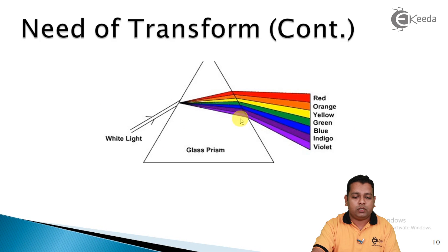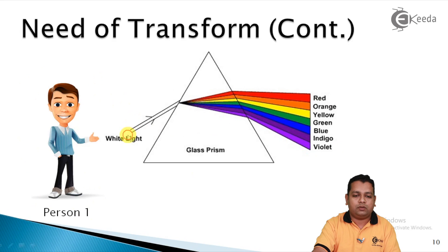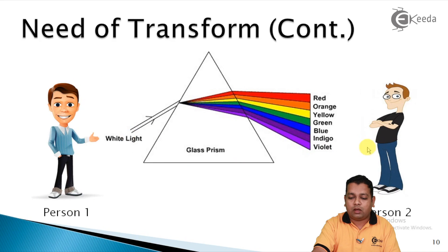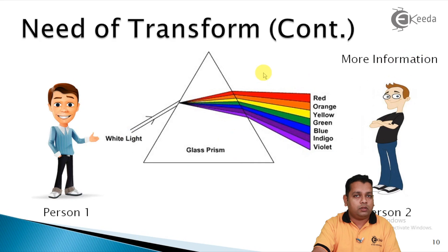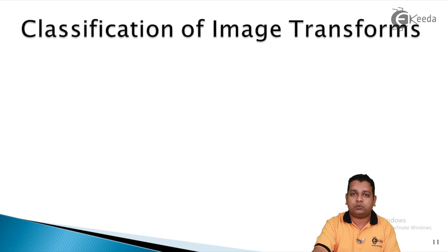A more colorful example from the diagram: the white light is resolved into spectral bands from red to violet. Person one has very small information — only that white light is there. But person two, standing on the other side of the glass prism, has more information. That is the potential and the use of the particular transform for applications in digital image processing.